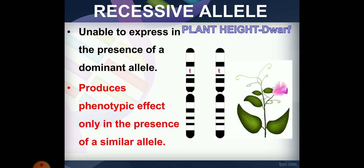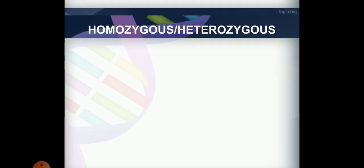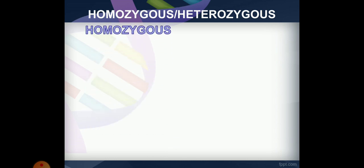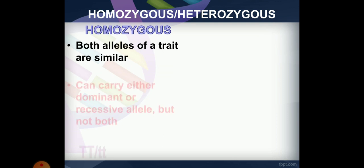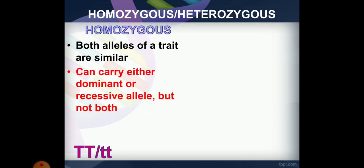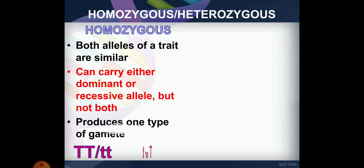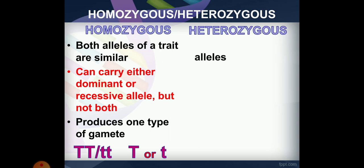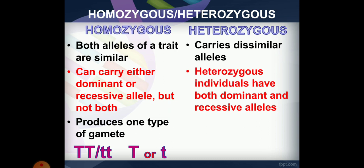The recessive allele, denoted by small t, produces the dwarf phenotype only when paired with another small t. A carrier individual can carry either a dominant or recessive allele.